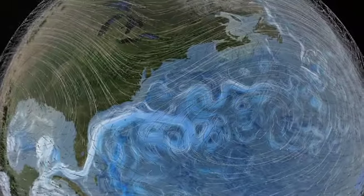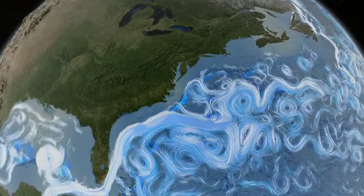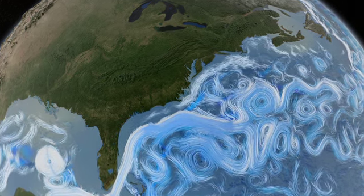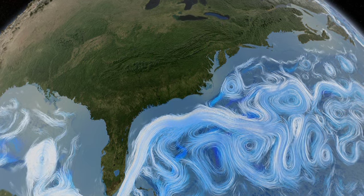Wind currents drive surface ocean currents. This computer simulation shows the Gulf Stream winding its way along the coast of North America.